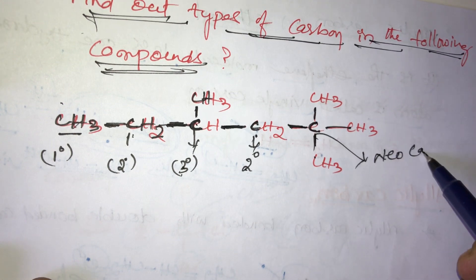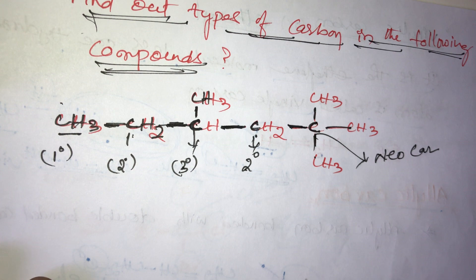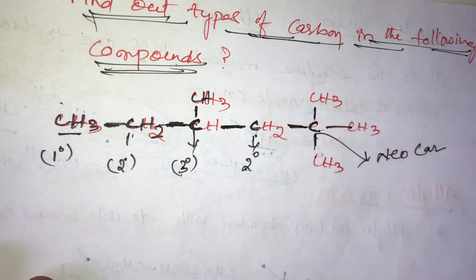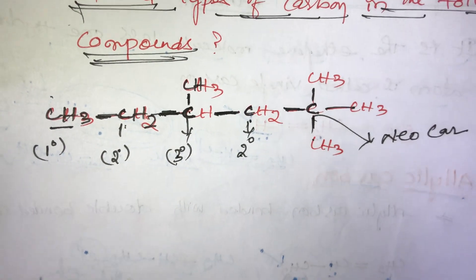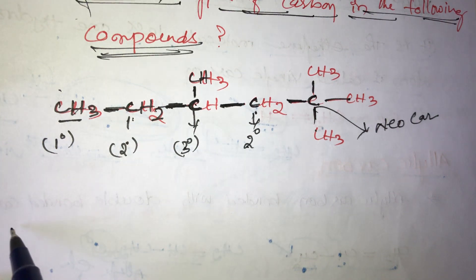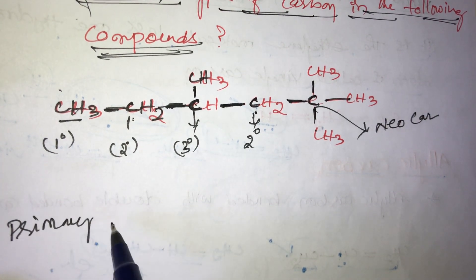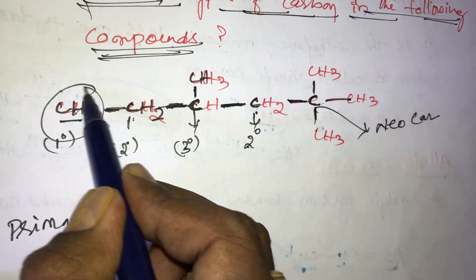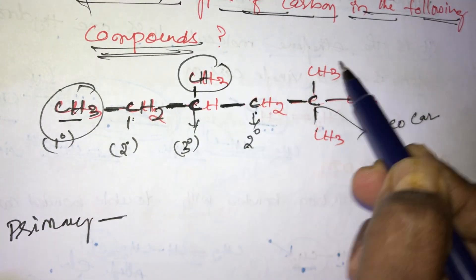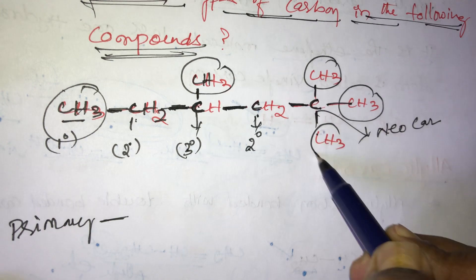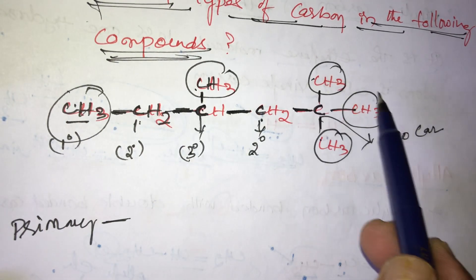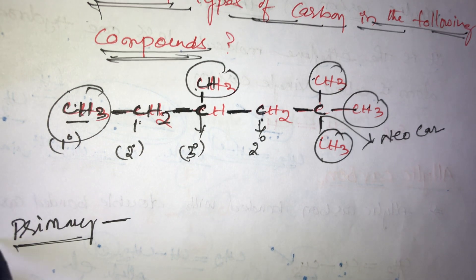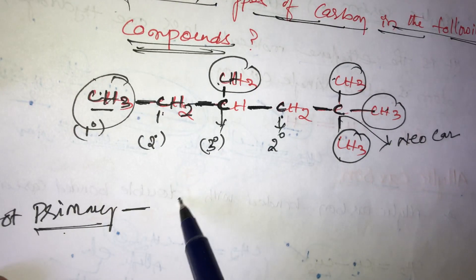These are the types of carbon in this compound. How many primary, secondary, tertiary, and neo carbons are there? Counting the primary carbons: this one, this one, this one, this one, and this one are all primary carbons. Total primary carbons are 5.